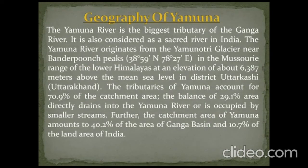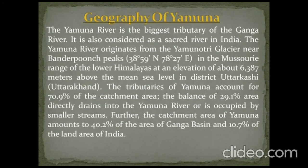The Yamuna river is the biggest tributary of the Ganga river and is also considered a sacred river in India. It originates from the Yamunotri glacier near Bandar Punch peaks in the Mussoorie range of the lower Himalayas, at an elevation of about 6,387 meters above sea level in district Uttarkashi. The tributaries of Yamuna account for 70.9 percent of the catchment area, while 29.1 percent drains directly into the Yamuna. The catchment area amounts to 42 percent of the Ganga basin and 10.7 percent of India's land area.